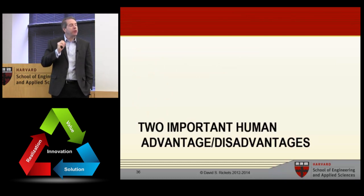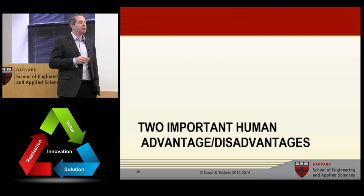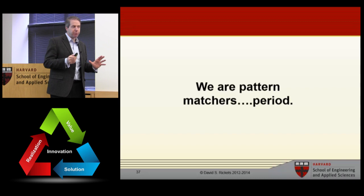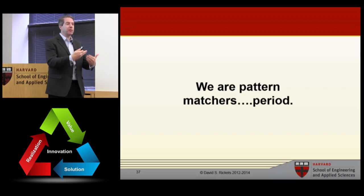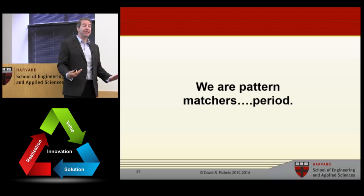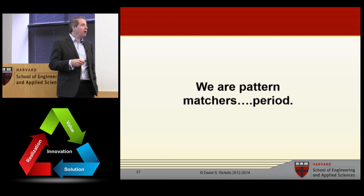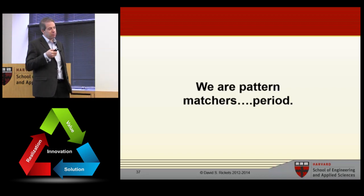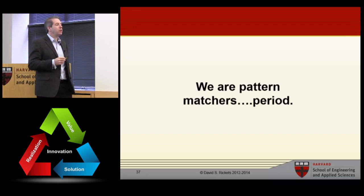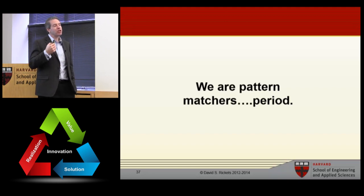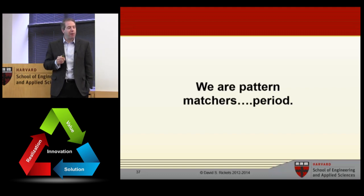A nice segue into the two important human advantages and disadvantages for problem solving. We as humans are pattern matchers — that's what our brains do. They don't solve complex problems the way a computer does; they solve them by matching patterns. But we can develop new patterns: we experience things, take in data, develop patterns and representations of the world, and they grow with time. There's a great paraphrased quote from Richard Feynman: it's fine to use intuition to solve a problem, but if your intuition is wrong, you need to change your intuition. That's all about changing how we think and see the world.